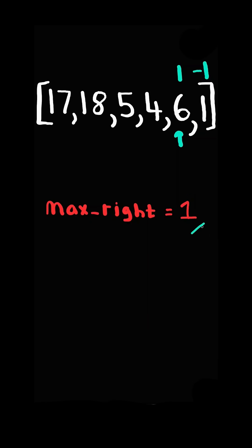We update the value to max_right and update max_right to the maximum of itself and the current number, and we continue.